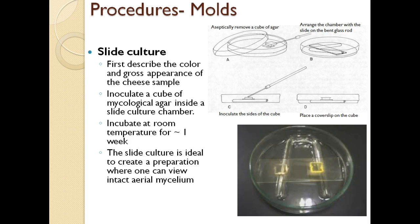One of the first things you'll be doing in lab is a slide culture, which will allow you to cultivate mold from the cheese sample you've been given. The slide culture begins by describing the color and gross appearance of the mold in the cheese, and then you inoculate a cube of specialized mycological agar inside a slide culture chamber. You'll incubate this for about a week, then examine both the slide underneath and the cover slip to look at microscopic detail and try to determine the identity of the mold.